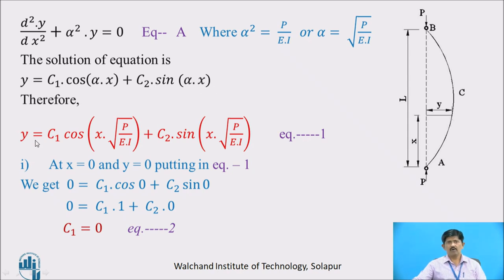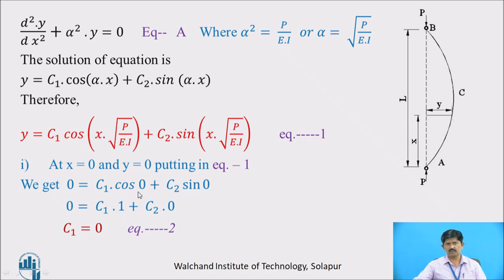The solution of equation (A) is Y = C₁·cos(αx) + C₂·sin(αx), replacing α with √(P/EI): Y = C₁·cos(x·√(P/EI)) + C₂·sin(x·√(P/EI)). This is equation (1). Applying the first boundary condition: at x = 0, deflection Y = 0 at point A. Substituting into equation (1): 0 = C₁·cos(0) + C₂·sin(0) = C₁·(1) + C₂·(0), therefore C₁ = 0, which is equation (2).